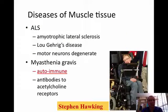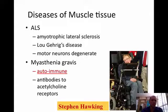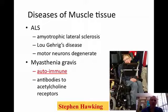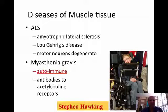We do have some diseases where muscle tissue is affected. ALS, or Lou Gehrig's disease, is one where the motor neurons slowly deteriorate, which causes loss of movement. Then you have myasthenia gravis, which is an autoimmune disease — the antibodies are actually attacking the acetylcholine receptors, and because the acetylcholine is not working properly, the muscles are not going to work properly.